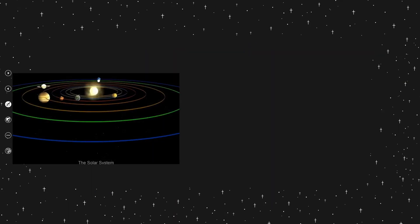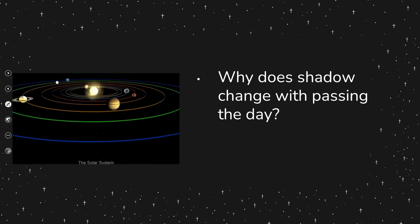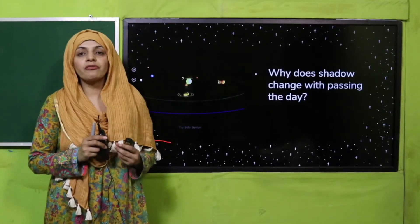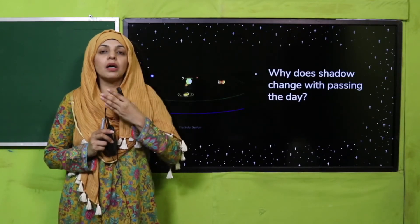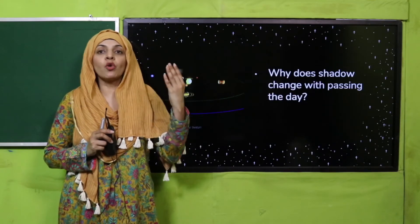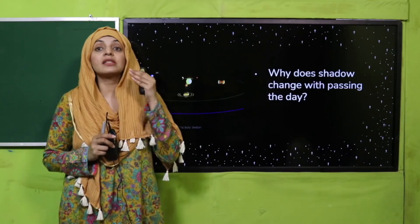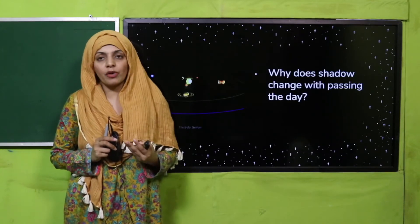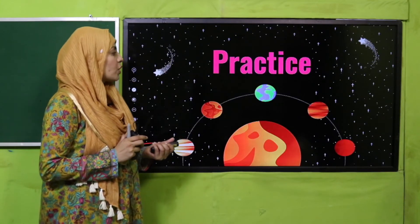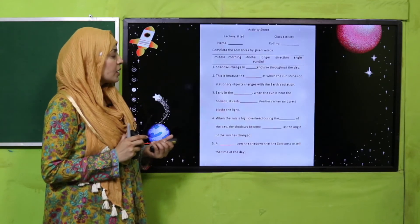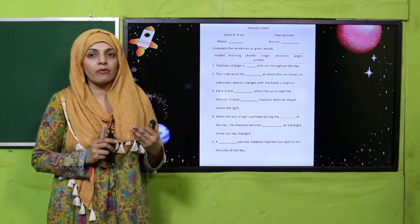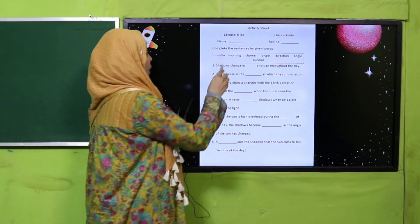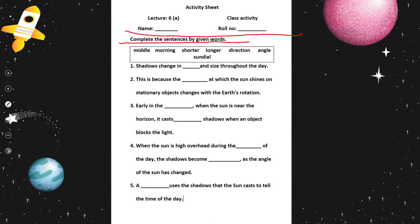For evaluation: why does the shadow change throughout the day? Because of the rotation of the Earth on its axis, the shadows change. We see the sun appear to move across the sky, but basically it is not the sun moving - it is the Earth moving on its axis. Now for practice, download the worksheet from the description box below or get it in print from your teacher. Write down your name and roll number.